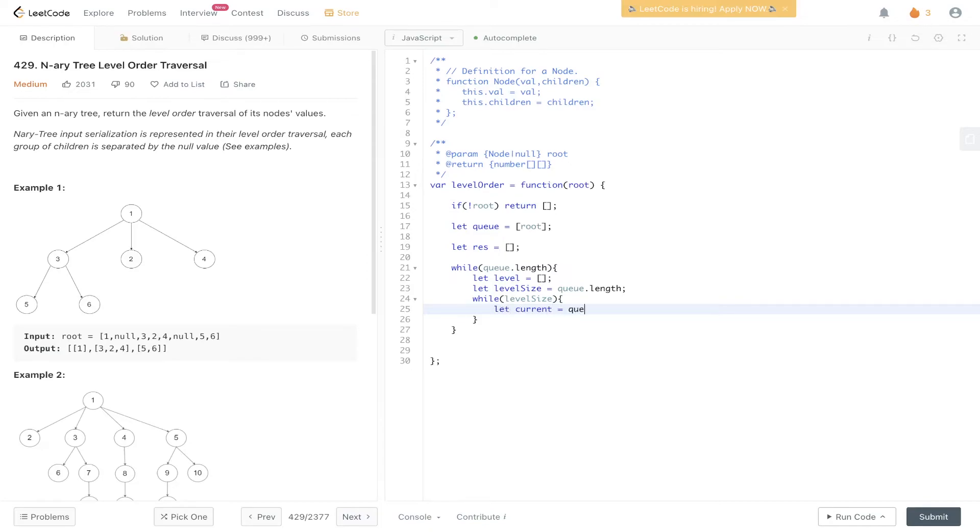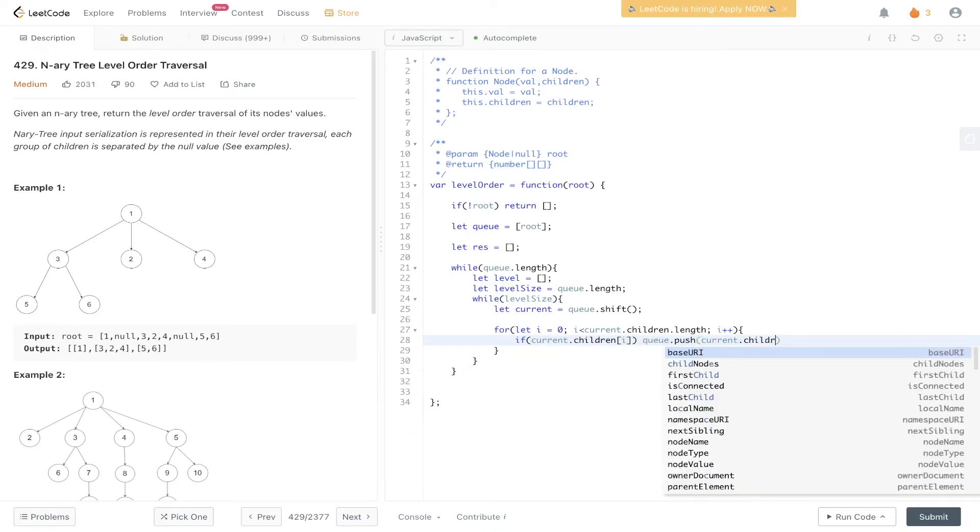Which goes through level by level. We shift off the current value, so queue.shift. We loop through the children, so i is less than current.children.length, i++. And then if current children at i is present, then we can push that value into queue: current.children[i].